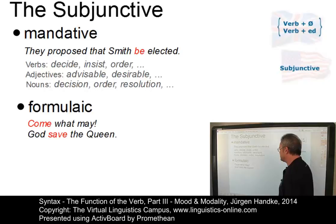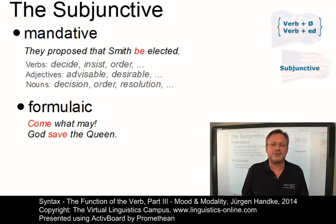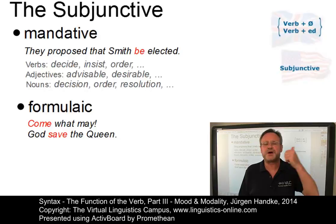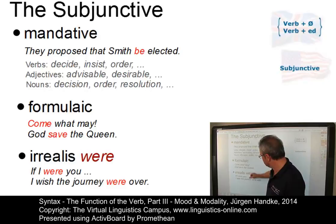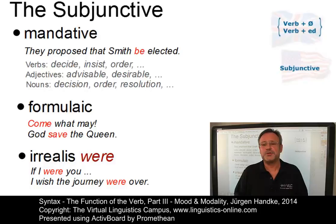There is also the formulaic subjunctive, as in 'come what may' and 'God save the Queen.' The formulaic subjunctive can be found in independent clauses in so-called formulaic expressions, which are contextually rather restricted. And then, after verbs like 'wish' or in adverbial clauses introduced by 'if', 'as if', 'as though', or 'though', the subjunctive is realized as so-called irrealis, and it is restricted to the use of 'were' — cases such as 'if I were you' or 'I wish the journey were over.' Note that in speech, 'were' is often replaced by the indicative form 'was.'